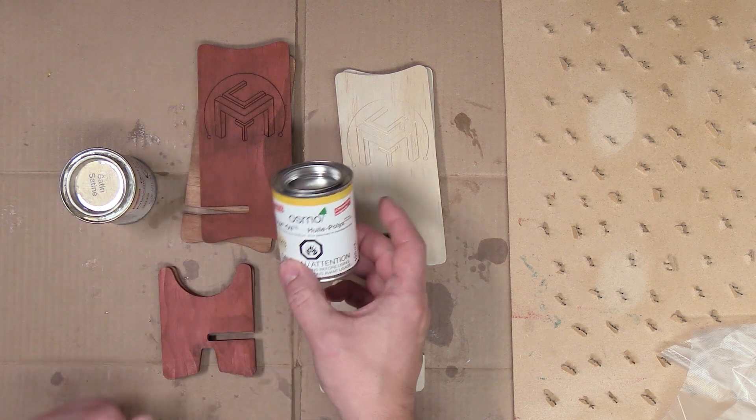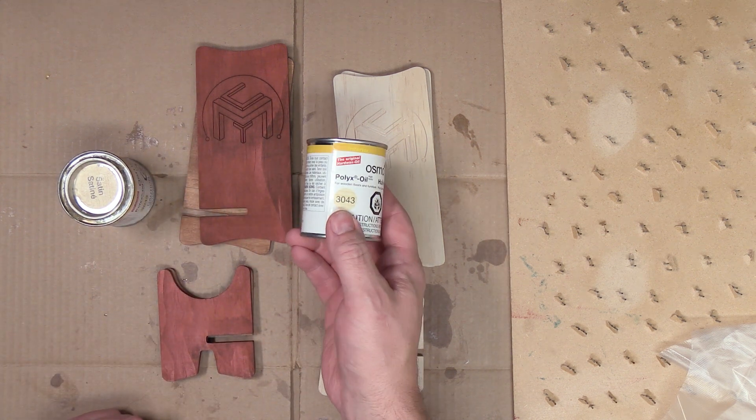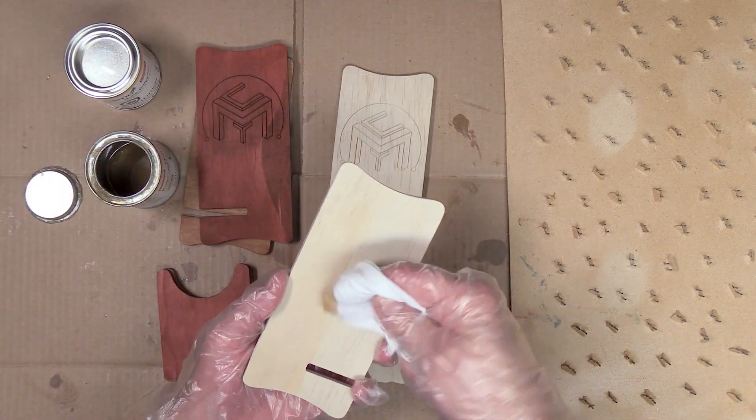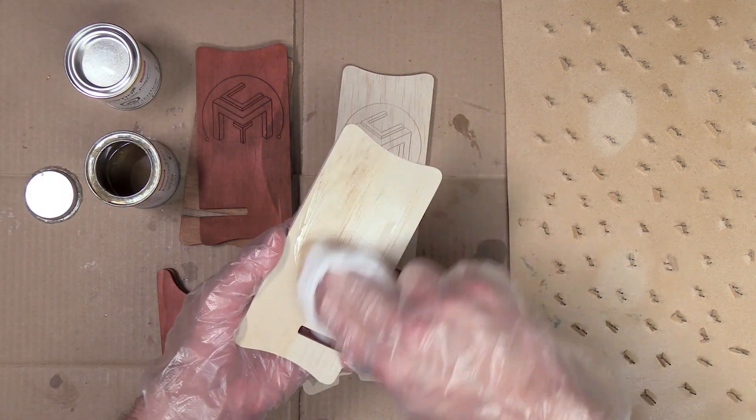Once again I'll be using this Osmo 3043. I'll be using a rag for a wipe on wipe off application. I'll be applying two coats and letting it dry overnight between the coats.